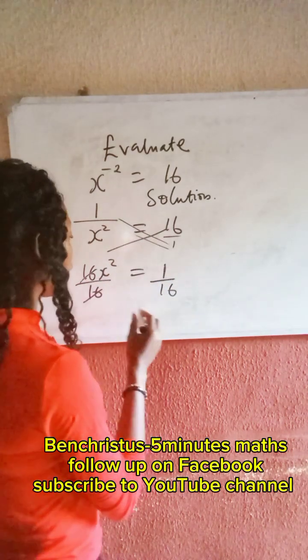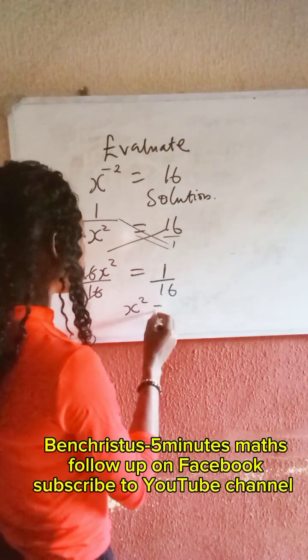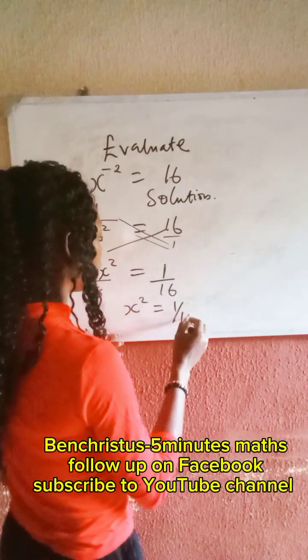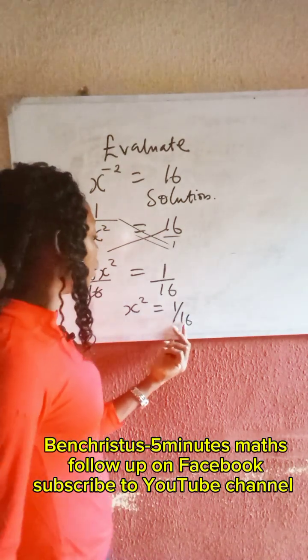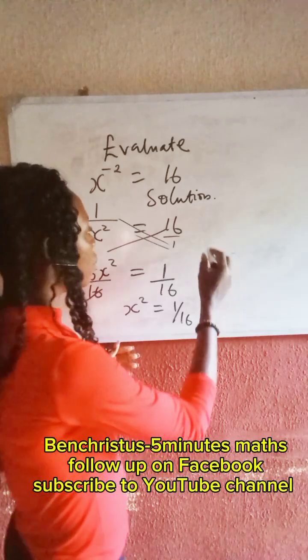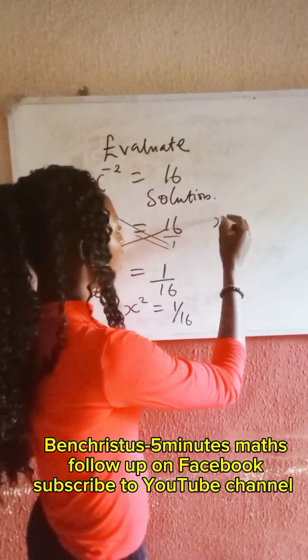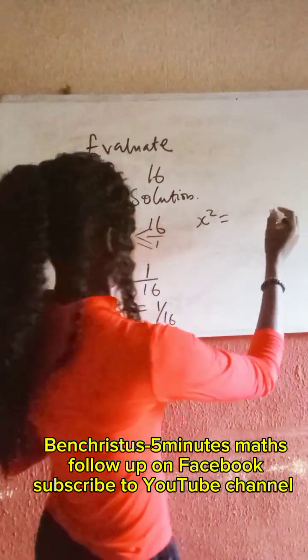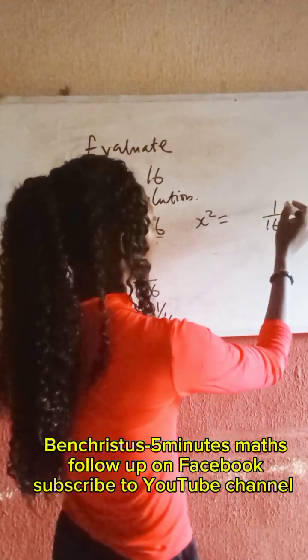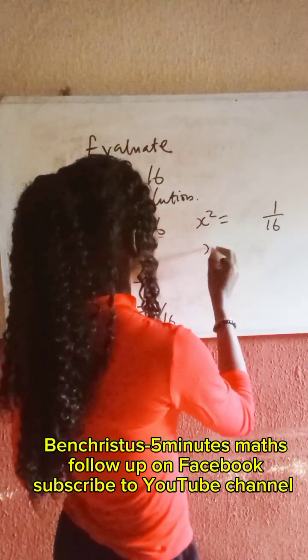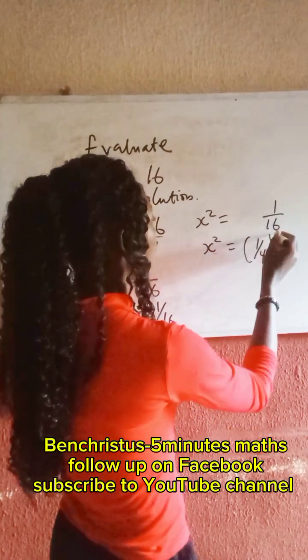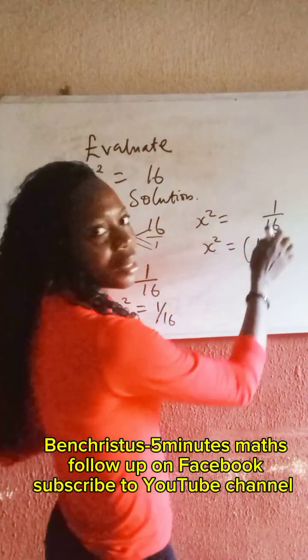So we have that x squared equal to 1 all over 16. Let's make the right hand side to look like the left hand side. So that gives us x squared equal to 1 all over 16. So this gives us x squared equal to 1 all over 4 squared, because this gives us 16.